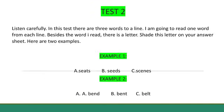Test 2. Listen carefully. In this test, there are 3 words to a line. I'm going to read one word from each line. Beside the word I read, there's a letter. Shade this letter on your answer sheet.